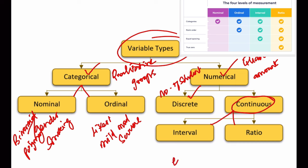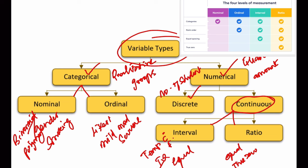In an interval scale, there will be equal spacing between the outcomes, but there may not be a true zero. In a ratio scale, there will be equal spacing between the outcomes, and also there will be a true zero. The example for interval scale is temperature in Celsius or Fahrenheit and IQ test values — there will be equal spacing but no absolute zero. The example for ratio scale will be weight, volume, and distance.